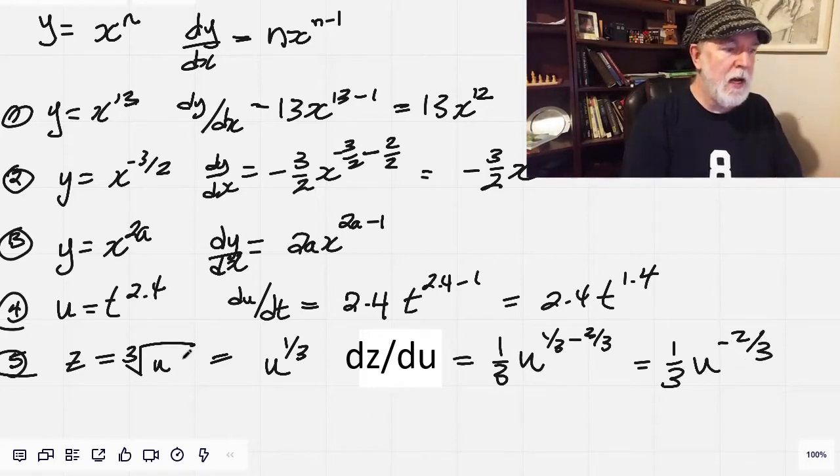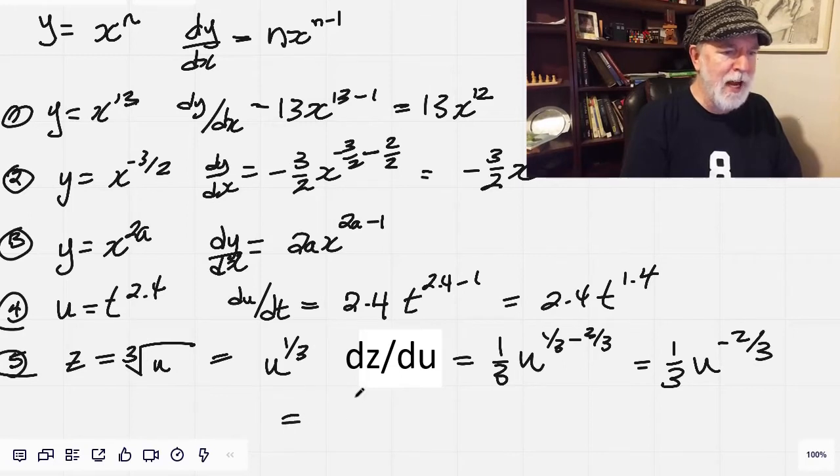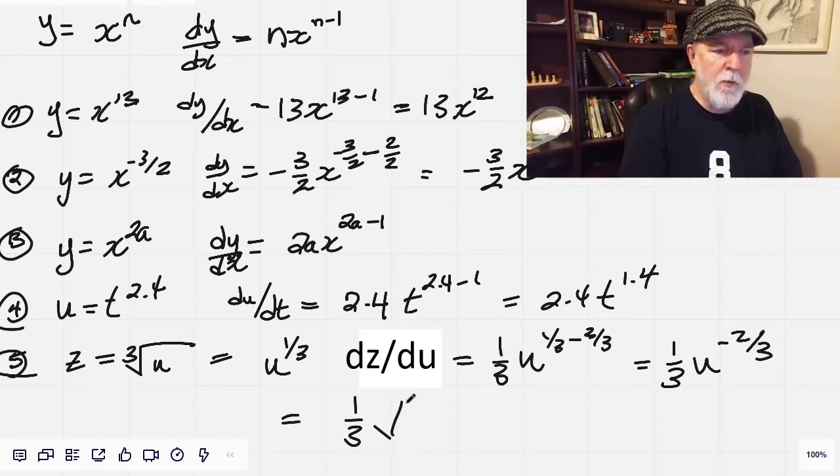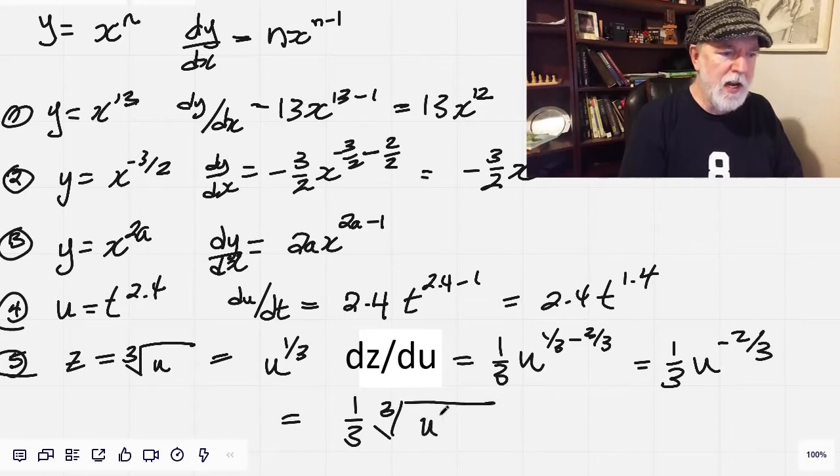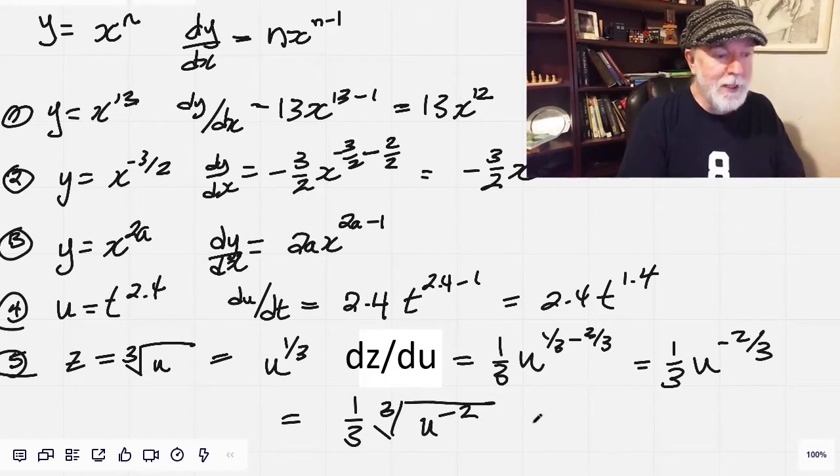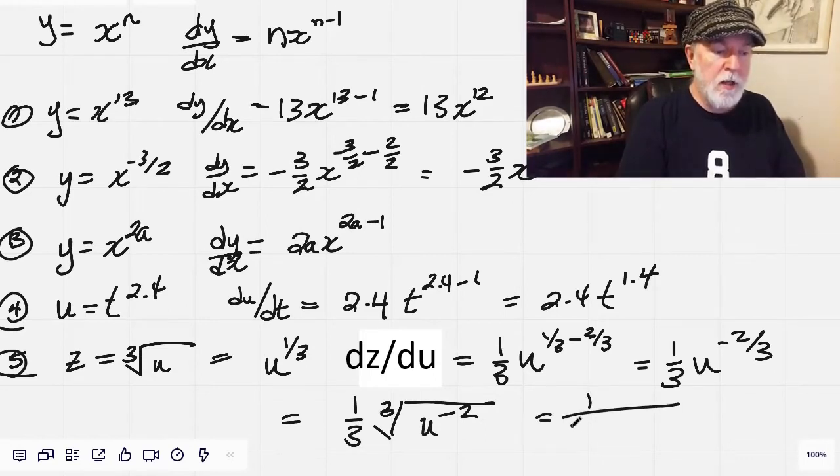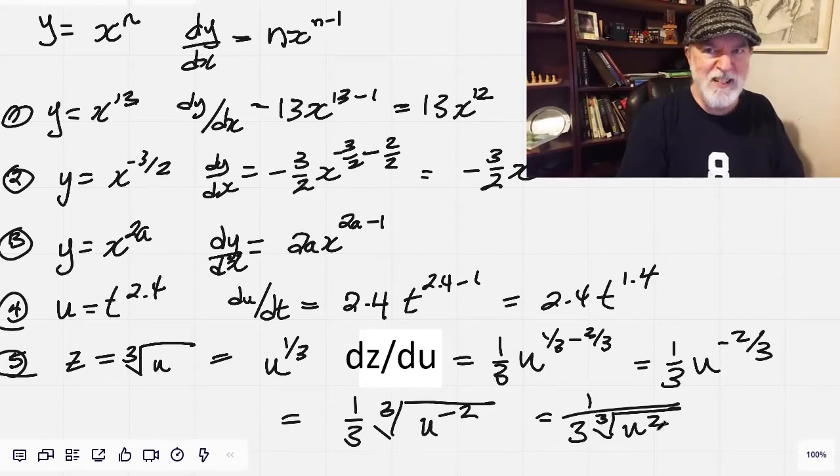And now I'm going to do one more thing. I'm going to express this as a radical again, because that way we're putting it in the same package as it was when we received it. So 3 and then u to the negative 2. Or we could write this also, we could write this as 1 over 3, cube root of u squared, whatever turns your fancy.